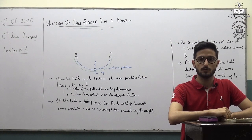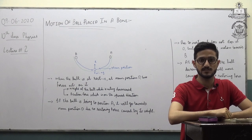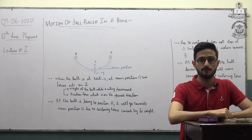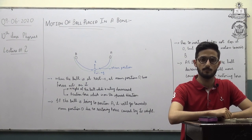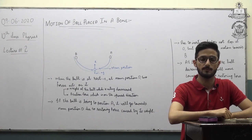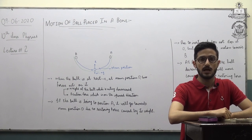In the previous lecture, we discussed our first topic of the physics book which is Simple Harmonic Motion. We discussed the definition of Simple Harmonic Motion and the first example which is the motion of a mass attached to a spring — we discussed that in detail.